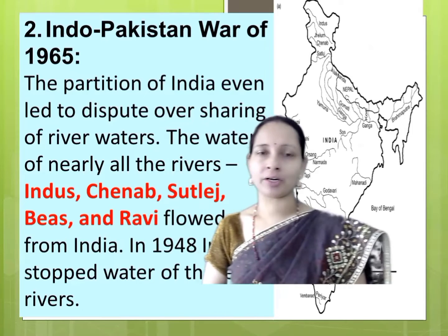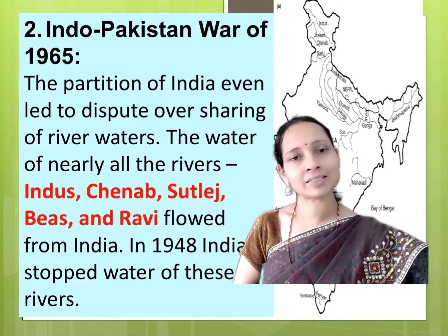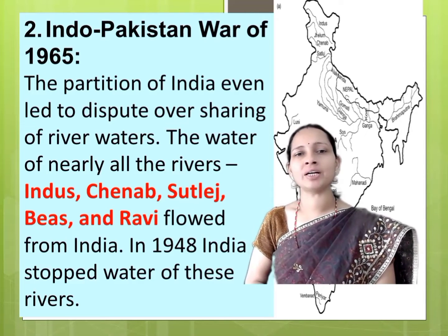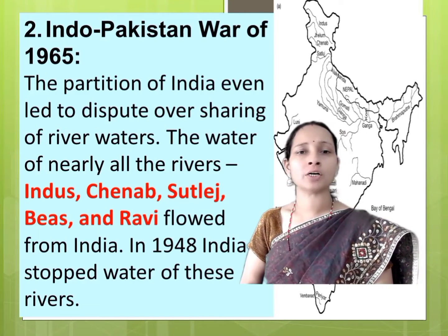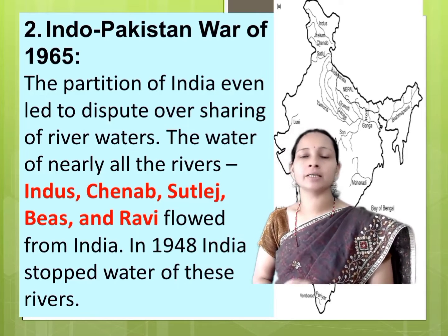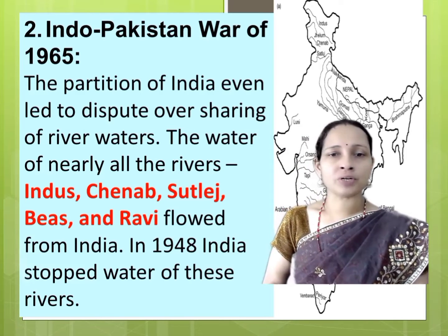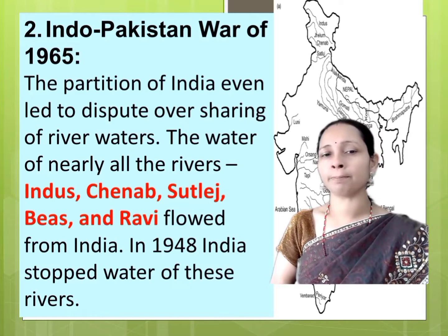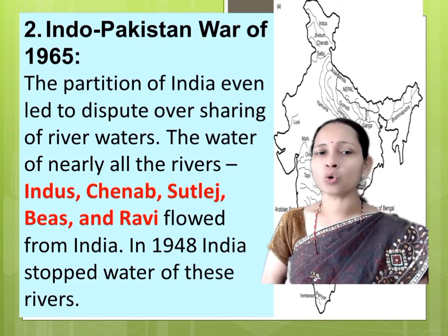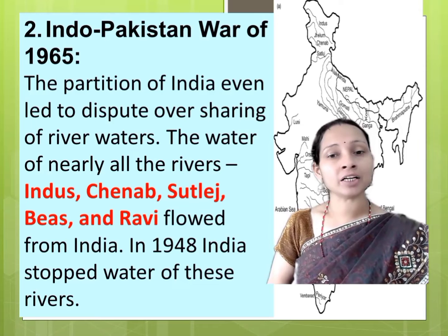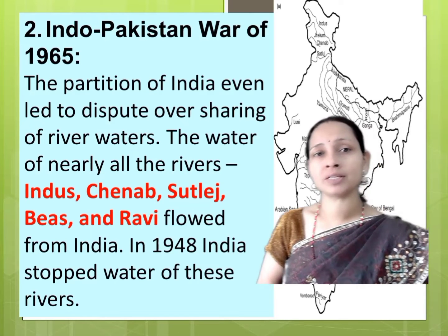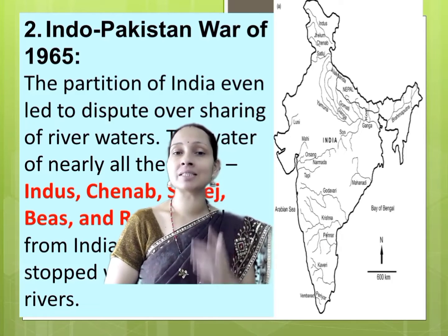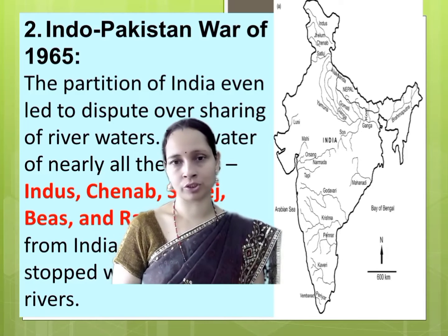Next war: Indo-Pakistan war of 1965. The partition of India led to a dispute over the sharing of river waters. The water of nearly all the rivers — Indus, Jhelum, Sutlej, Beas and Ravi — flowed from India. In 1948, India stopped the water of these rivers. Put a glance on the map which shows the location of those rivers.